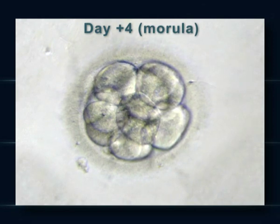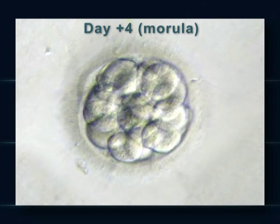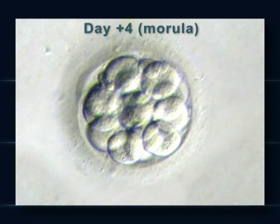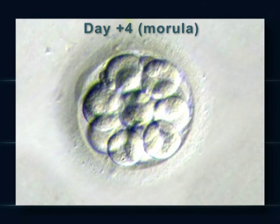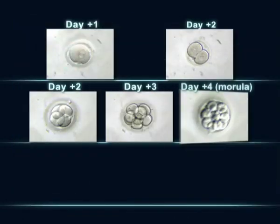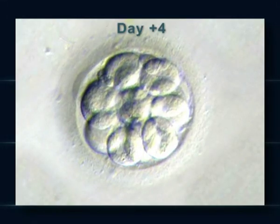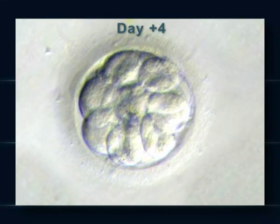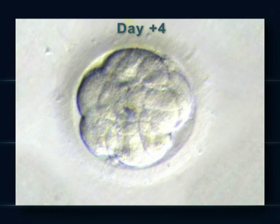On day four, the embryo divides a number of times, becoming a morula. This is when it begins to become compact.